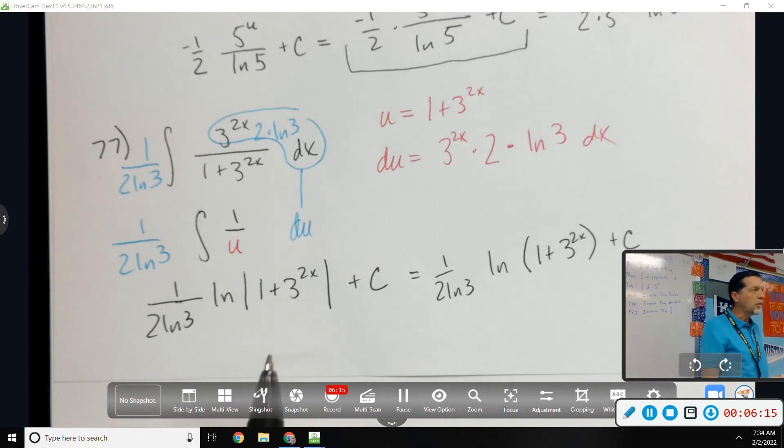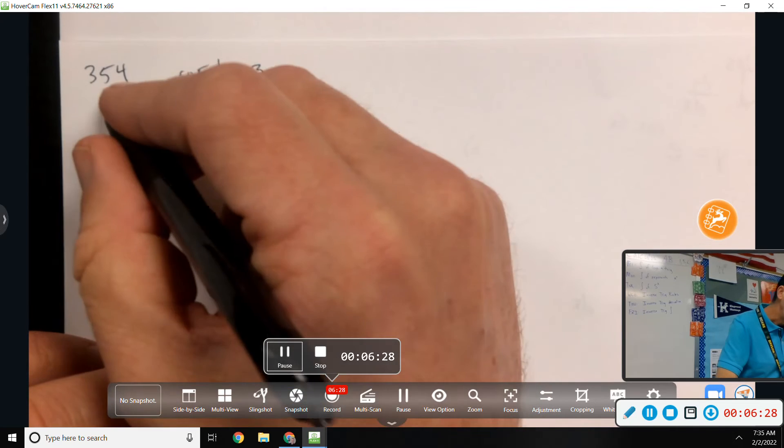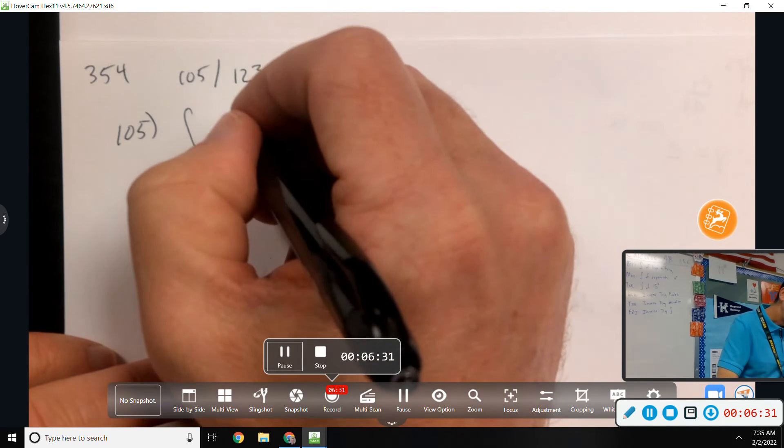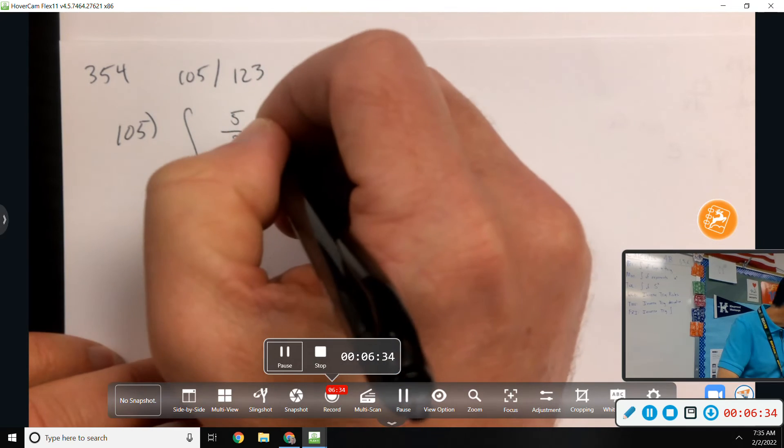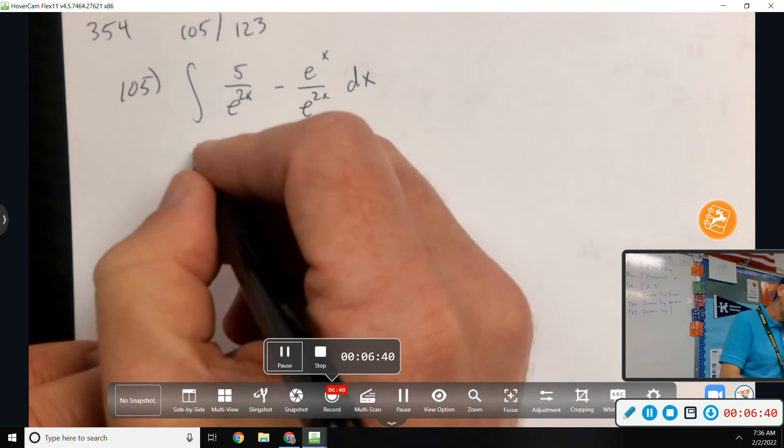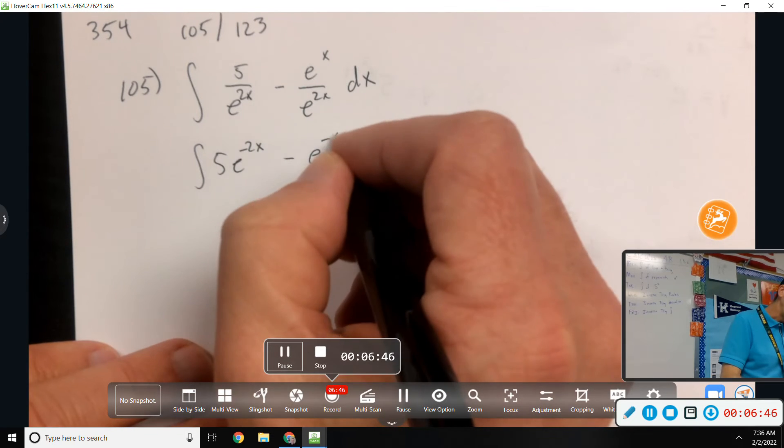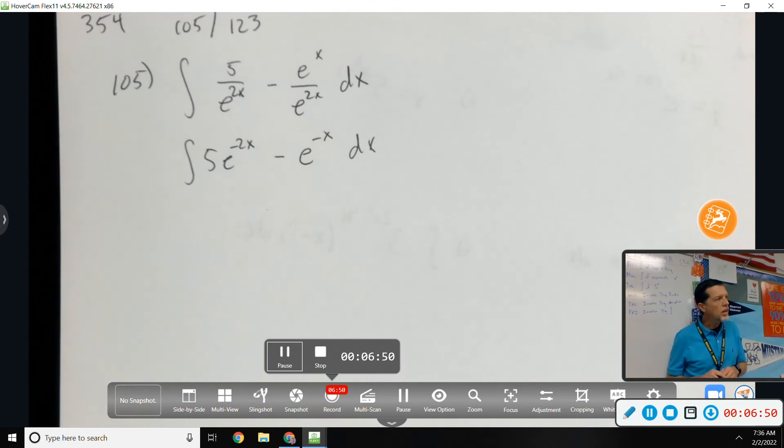Anything else from 363 or from prior? So we'll give a first hint on page 354, number 105. Yeah, I would split that up: 5 over e to the 2x minus e to the x over e to the 2x. There's where we can simplify. So 5e to the negative 2x minus e to the negative x. And now, rather than one complicated integral, you've got two easier integrals. Can I stop there on 105?